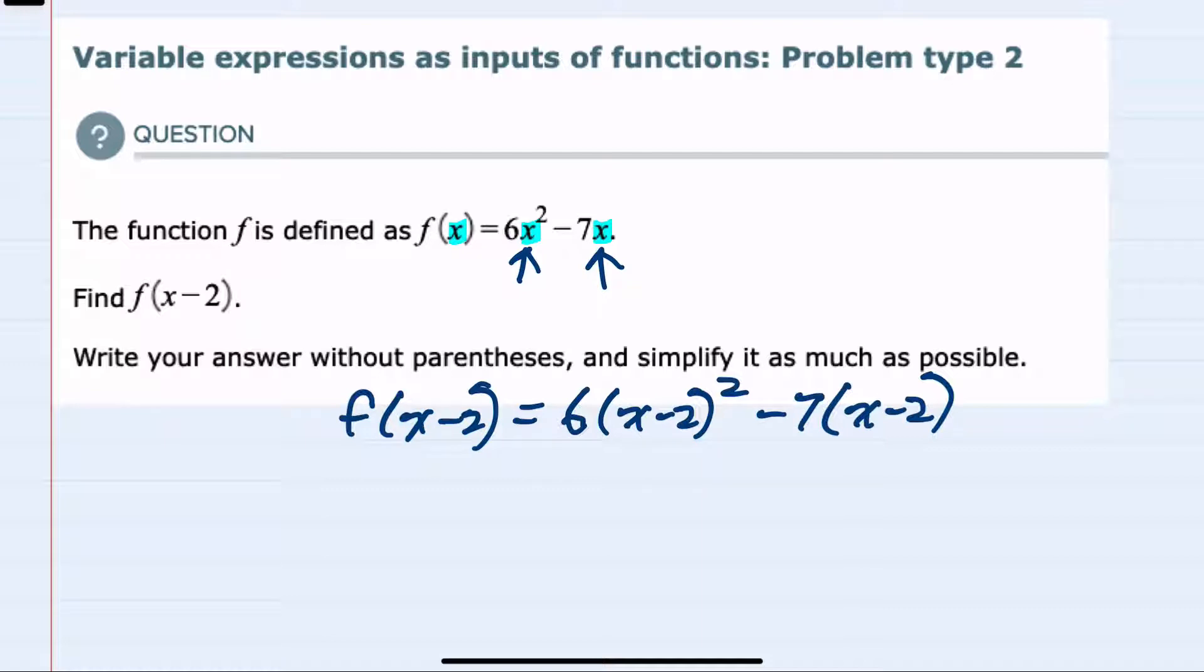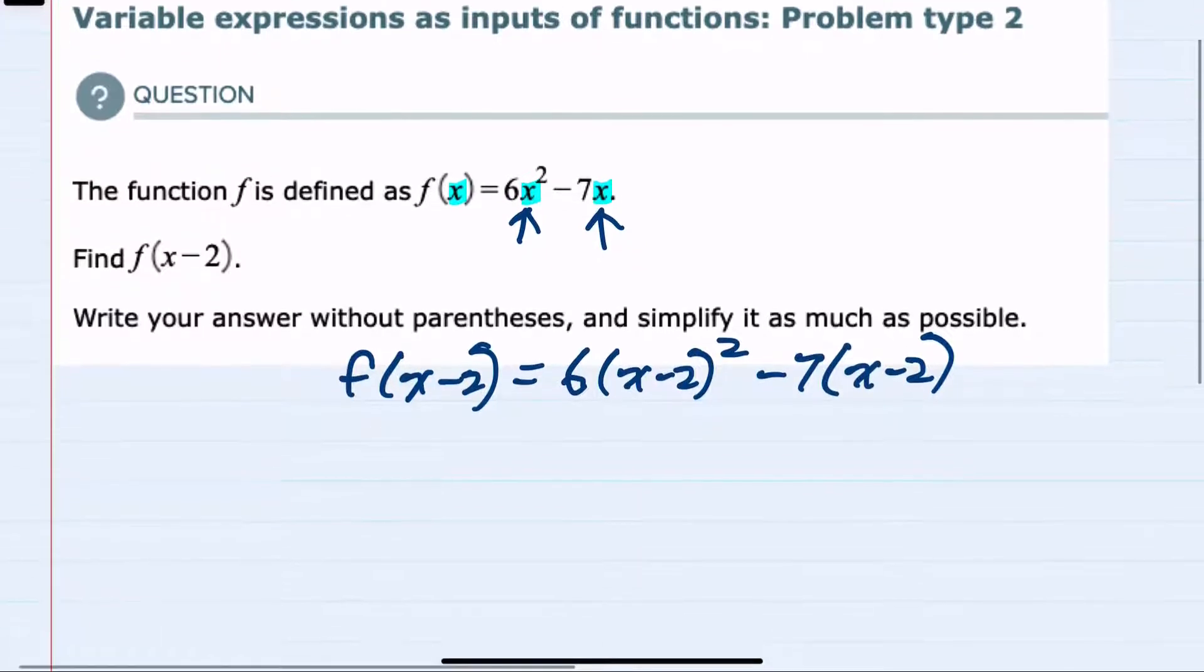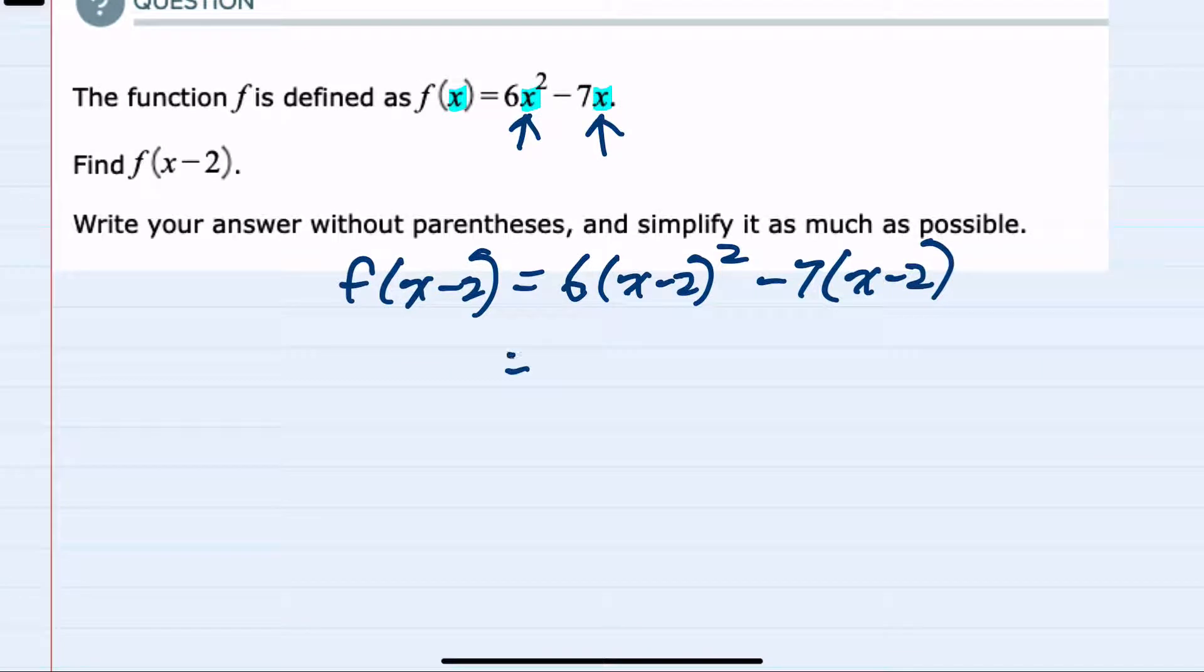And from here we can simplify following the order of operations which says that we would first do exponents. So the x minus 2 squared is going to be x minus 2 times x minus 2. And we can now start with the multiplication. Since this first string of multiplication has binomial terms being multiplied I'm going to do that part of the multiplication first.